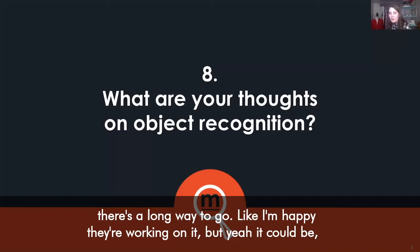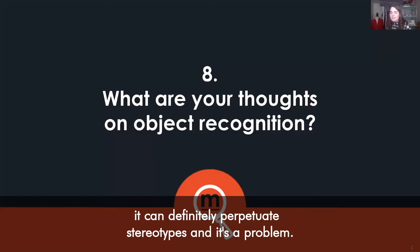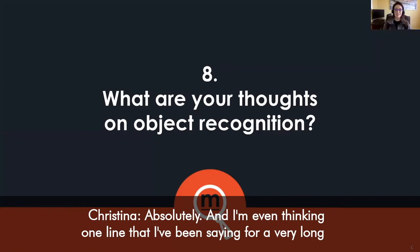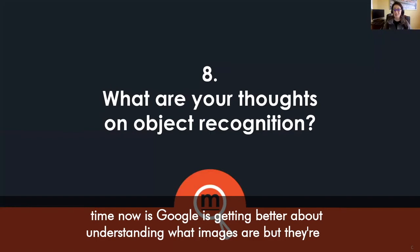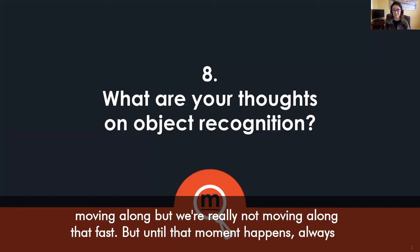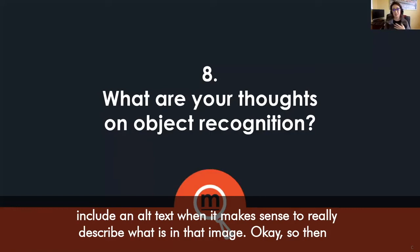It can definitely perpetuate stereotypes and it's a problem. I've been saying for a long time that Google is getting better at understanding what images are, but they're just not there yet. Until that moment happens, always include alt text when it makes sense to really describe what is in that image.